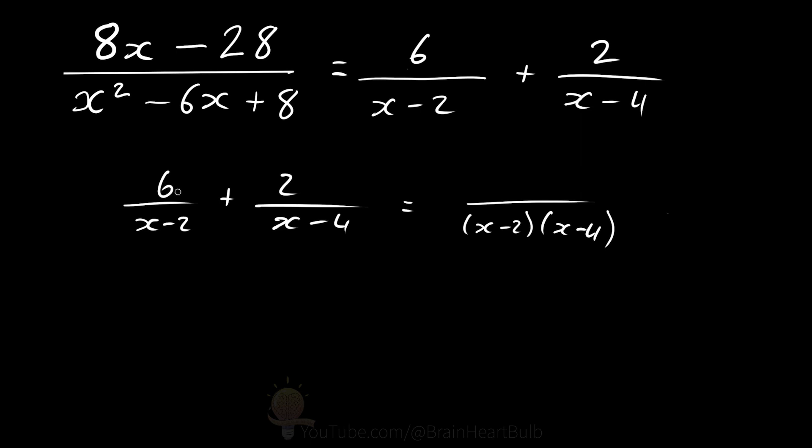We multiply the 6 by x minus 4, so 6x minus 24, plus 2x minus 2. And then we simplify: 6x minus 24 plus 2x minus 4 over x squared minus 2x minus 4x plus 8.